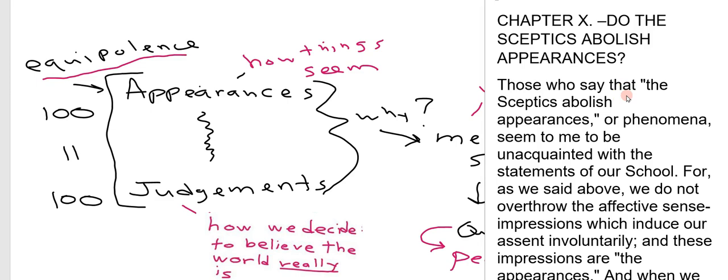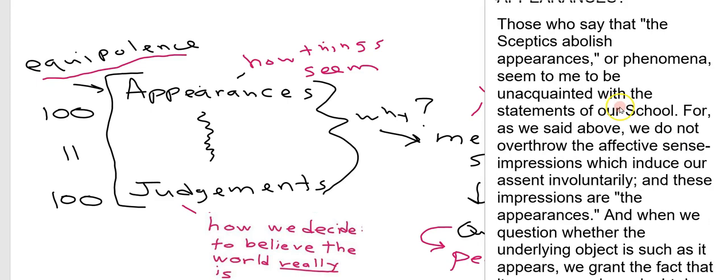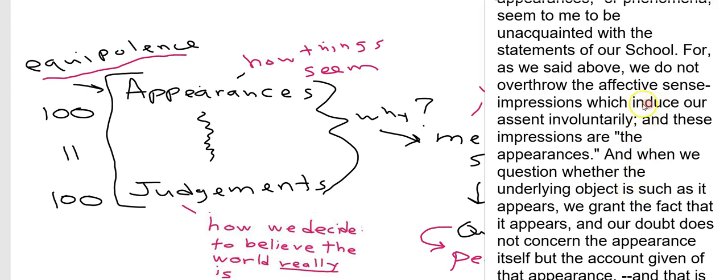He says, those who say that skeptics abolish appearances or phenomena, just how things seem to us, seem to me to be unacquainted with the statements of our school. For we have said above, we do not overthrow the effect of sense impressions, which include our assent involuntarily. In other words, we have no choice but to see the world the way we see it.